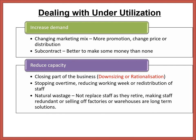To deal with under-utilization, you can increase demand by changing your marketing mix — more promotion, adjusted prices, or different distribution to get more sales. You can subcontract — it's better to make some money than none. Or you can reduce capacity through downsizing or rationalization: closing parts of the business, shutting down shops, or closing sections of your factory.